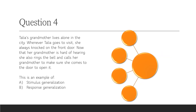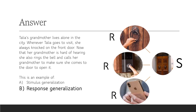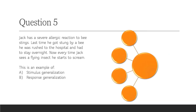Question 4: Talia's grandmother lives alone in the city. Whenever Talia goes to visit, she always knocks on the front door. Now that her grandmother is hard of hearing, she also rings the bell and calls her grandmother to make sure she comes to the door to open it. Is that an example of stimulus generalization or response generalization? The answer is response generalization. There is only one stimulus — getting the door opened — and many responses: knocking on the door, ringing the bell, or calling on the phone.